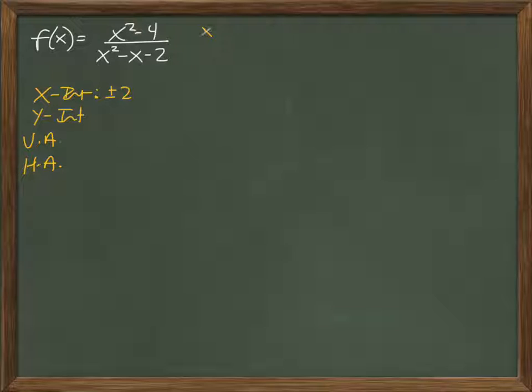Because if you were to solve the top, x squared minus 4 equals 0, add 4, x squared equals 4, square root. You might say x equals 2, but it's actually positive and negative 2.